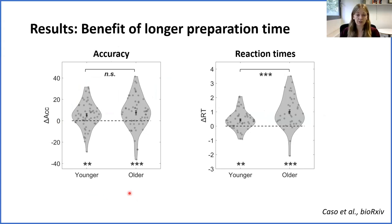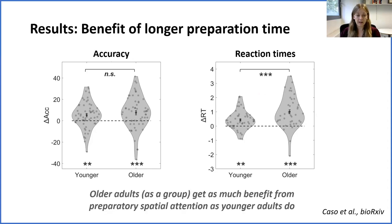The y-axis shows the area between the curves — in other words the benefit of preparatory spatial attention. The separate bars show the mean and standard deviations for younger and older groups, with individual dots showing individual participant results. When considering accuracy, the area between the curves was significant for both groups and there was no significant difference between the two groups, suggesting they got a similar benefit from longer spatial cues. For reaction times, the area between the curves was again significant in both groups; however the difference between the groups was also significant, with older adults getting a larger benefit to reaction times than the younger group. Overall, older adults get at least as much benefit from preparatory spatial attention as younger adults.